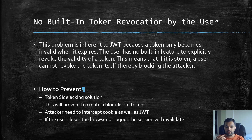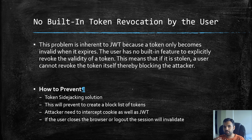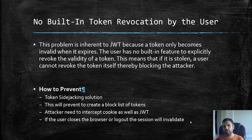This eliminates the need for a blacklist approach. You're also decreasing the likelihood that an attacker can exploit the application, because now they must intercept both the cookie and the JWT. If the user closes the browser or logs out, the session will invalidate the cookie automatically. When pen testing, if you log out and can still replay the JWT to access data, you should recommend this sidejacking solution.